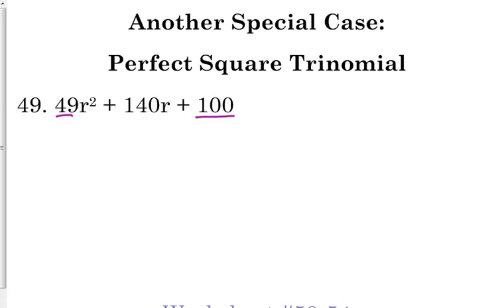And this 140 right here comes from 2 times those other numbers that we squared. So 7 squared gives us 49, 10 squared gives us 100, so that's where the 140 comes from. It's 2 times those two numbers.